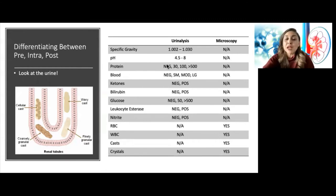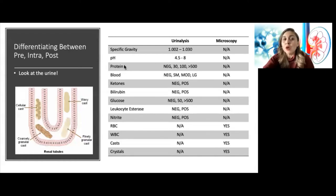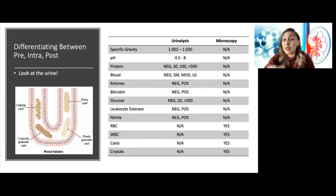Looking at protein and blood together: we're looking for glomerular etiologies of kidney disease. Protein and blood are too large — they should not be getting filtered, and we should not see them in the urine. If we see them, it could indicate a glomerular etiology. Important to note: only urine albumin will turn protein positive on UA. There are other proteins that can elevate the urine protein-creatinine ratio but won't turn the UA positive.